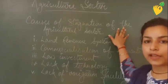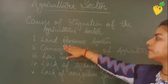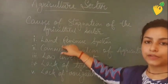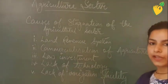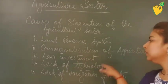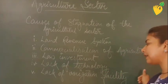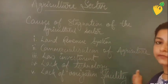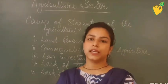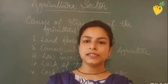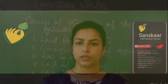Let's recall the causes of stagnation of the agricultural sector once again: the first is the land revenue system, second is commercialization of agriculture, third is low investment, fourth is lack of technology, and fifth is lack of irrigation facility. These were the prime reasons for stagnancy in the agricultural sector during British rule.